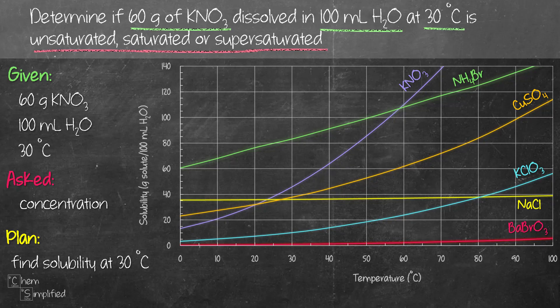So the first thing we want to do is find the solubility of KNO3 in 100 ml of water at 30 degrees Celsius. To do that, we locate the curve for KNO3, we find the temperature at 30 degrees, and then we draw a straight line up until it hits the KNO3 curve, and then we draw a horizontal line to the left, and then we read off the solubility.